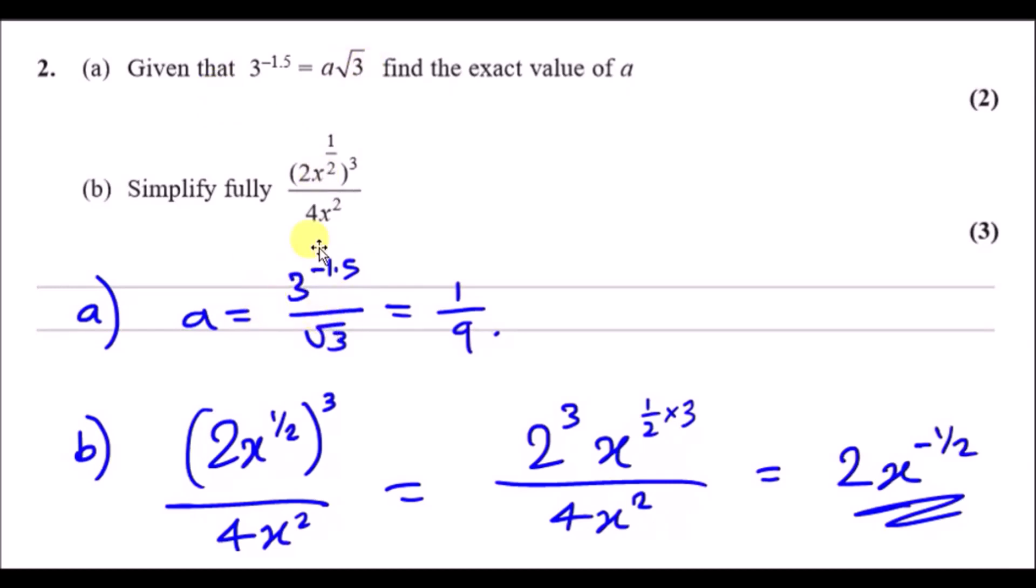Dividing √3 across gives us something like this, and then putting this in your calculator - because remember, P1 you can actually use your calculator this time unlike C1 - you get 1/9. Now part b: simplify fully.